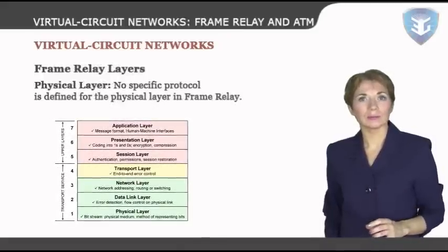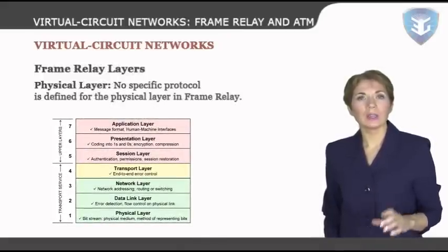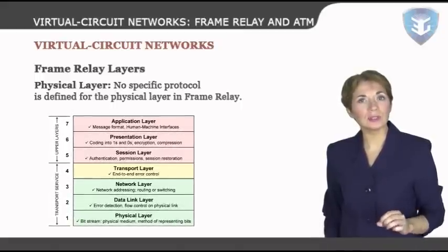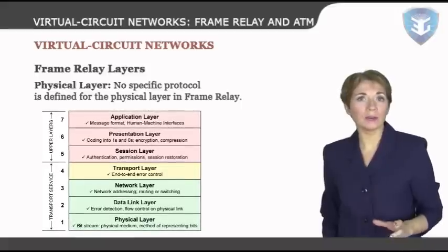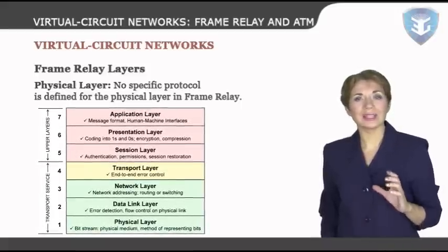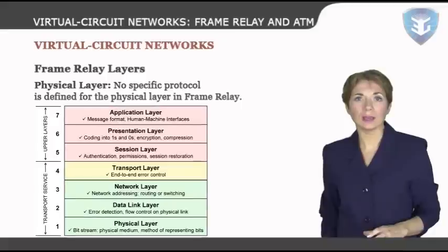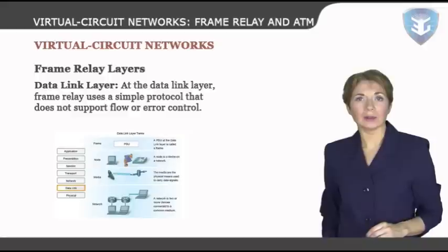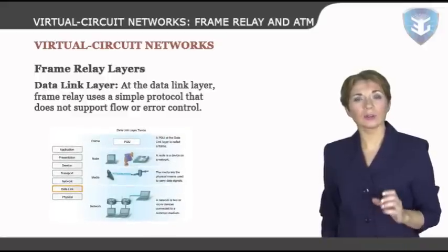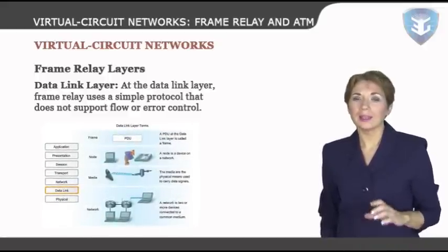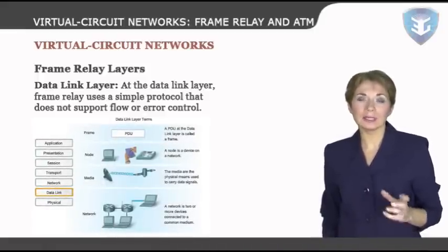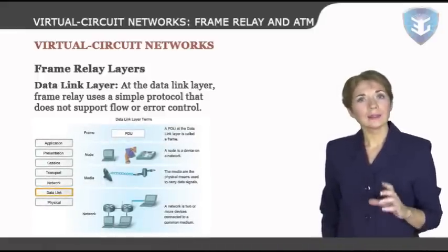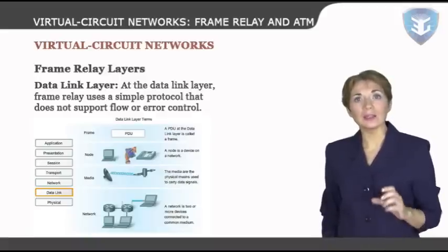Frame relay layers: At the physical layer, no specific protocol is defined; it is left to the implementer to use whatever is available. Frame relay supports any of the protocols recognized by ANSI. At the data link layer, frame relay uses a simple protocol that does not support flow or error control — it only has an error detection mechanism. The address field defines the DLCI as well as some bits used to control congestion.